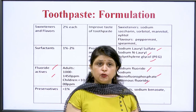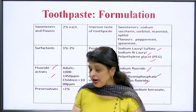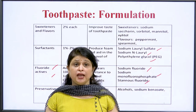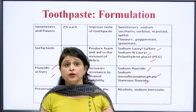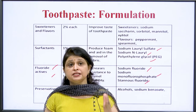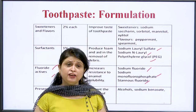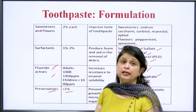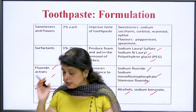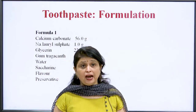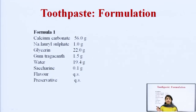We generally do not add fluorides to normal toothpaste, but medicated toothpaste requires them. Coloring agents and preservatives must be added to all formulations — coloring agents give a good color, and preservatives stabilize the product, providing stability and enhancing the shelf life. Preservatives are generally added at a concentration less than 1 percent. Examples include alcohols and sodium benzoate. A typical lab formula contains: calcium carbonate, sodium lauryl sulfate, glycerine, gum tragacanth, water, saccharine, flavor, and preservatives.